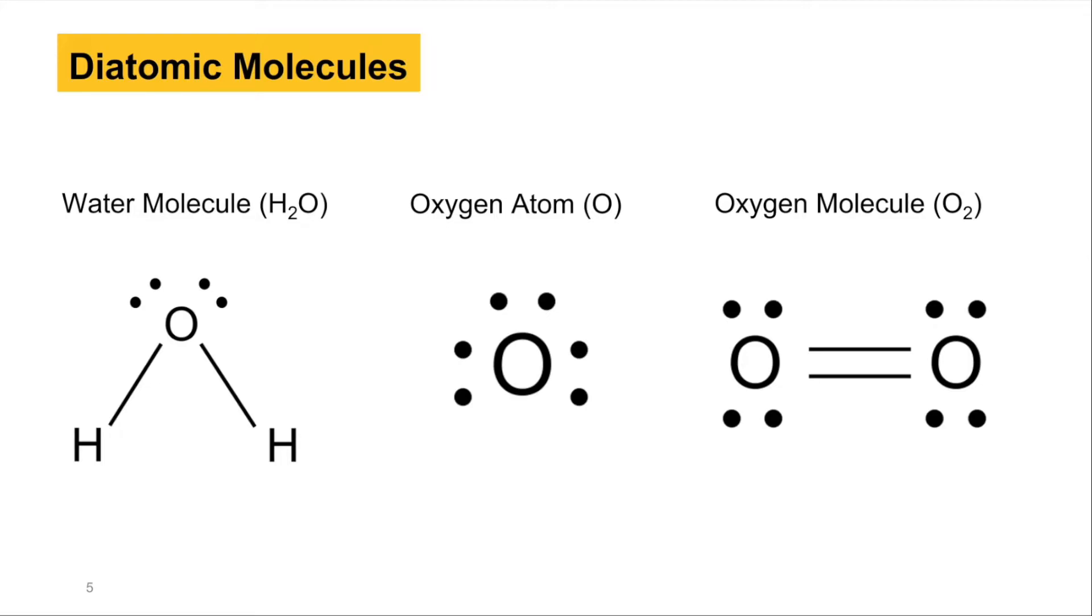The elements that form diatomic molecules in their standard state don't have to be paired when they're in compounds. For example, in water, or H2O, there's only one oxygen. This is okay because it is stabilized by its bonds to the hydrogens.